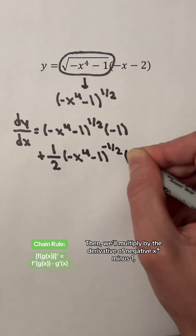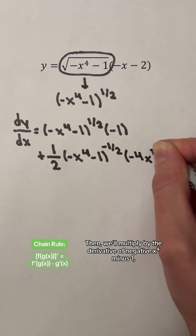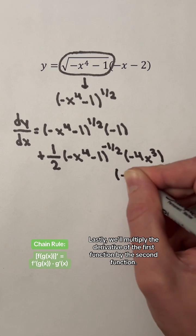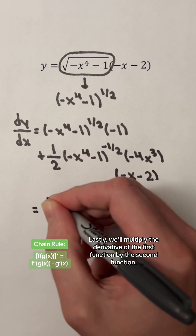Then, we'll multiply by the derivative of negative x to the fourth power minus 1, which is negative 4x cubed. Lastly, we'll multiply the derivative of the first function by the second function.